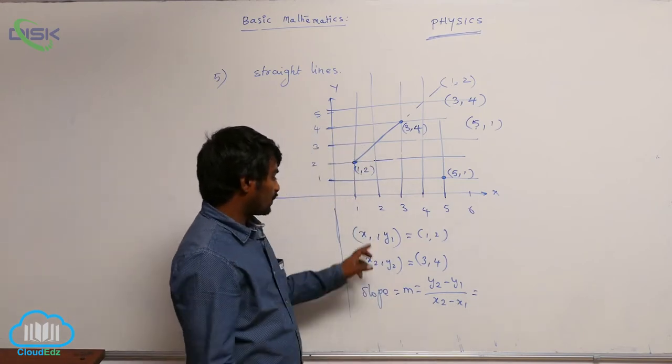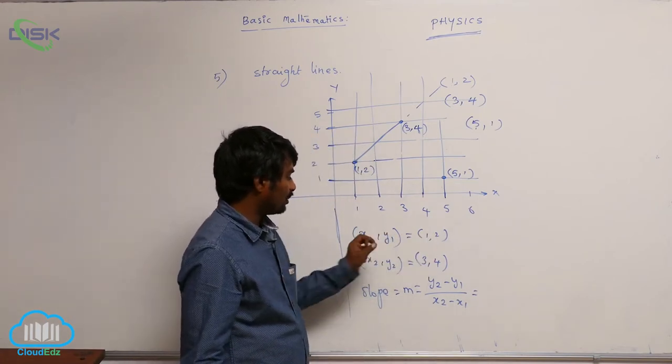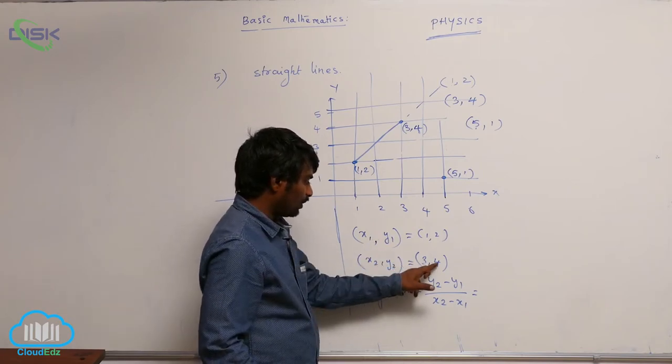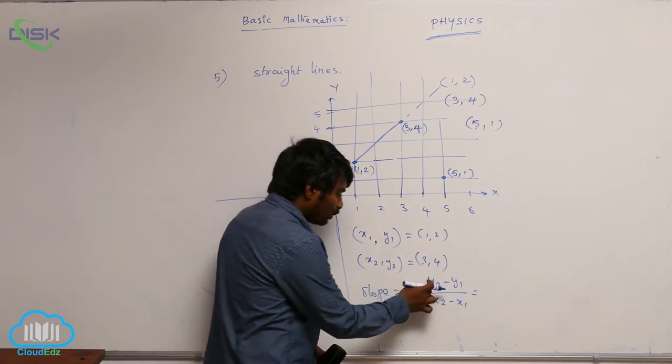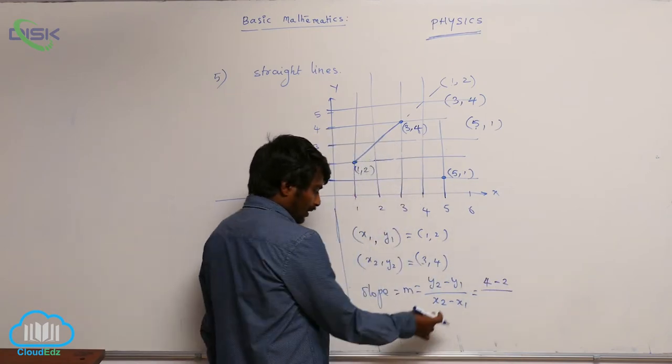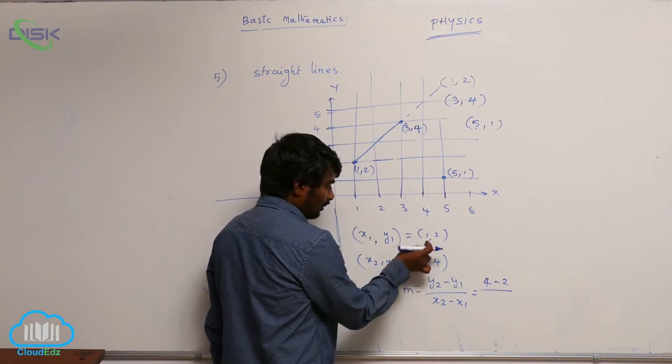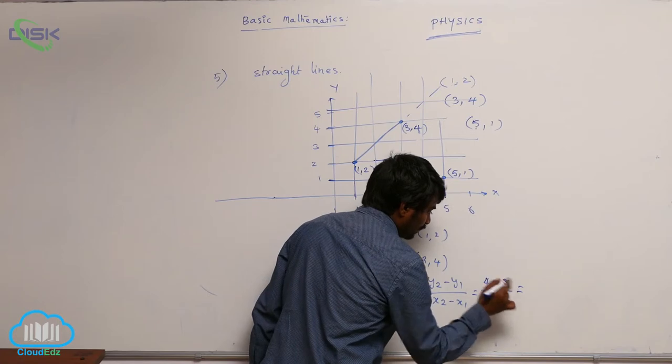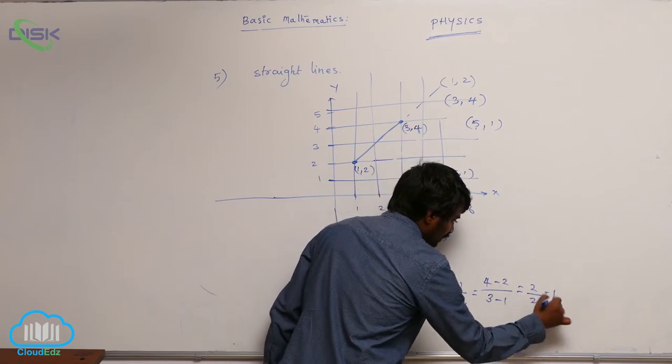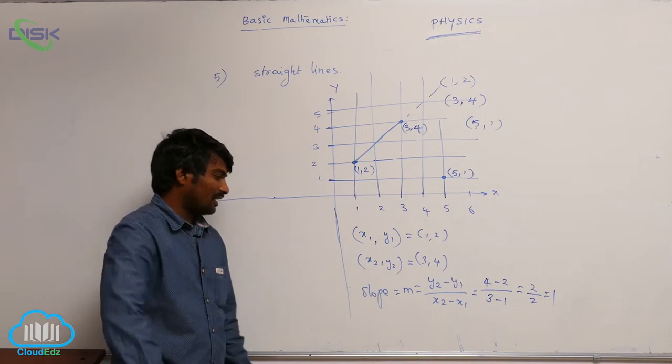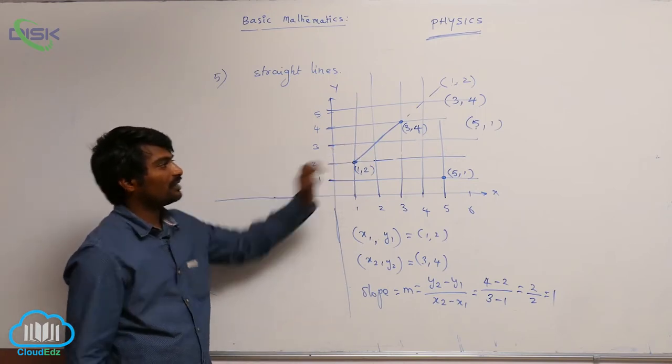So x1 is 1, y1 is 2, x2 is 3, y2 is 4. y2 minus y1: 4 minus 2 by x2 minus x1, x2 is 3, x1 is 1. So 3 minus 1. What you are going to get? 2 by 2, that is equal to 1. This is the slope of this equation.